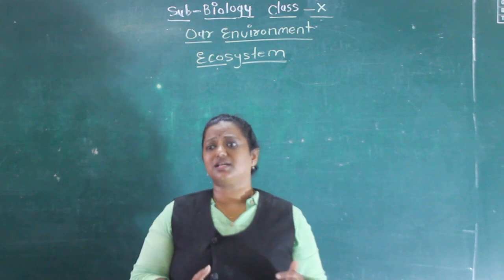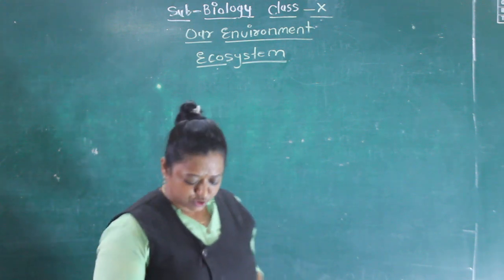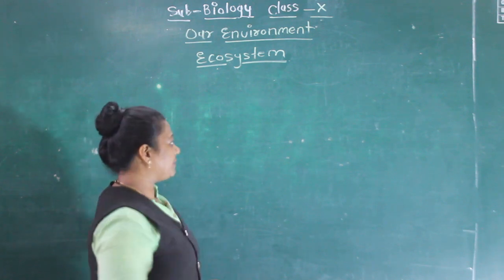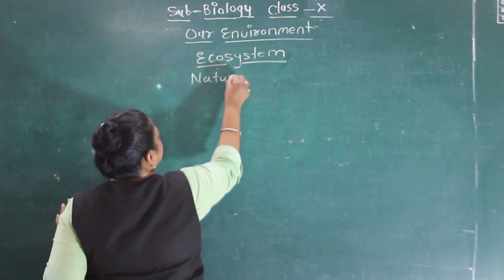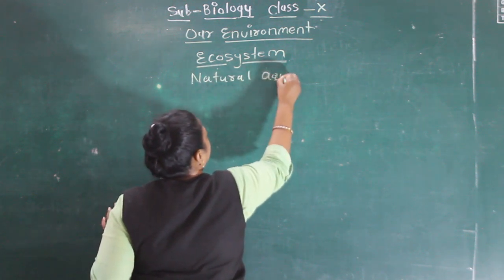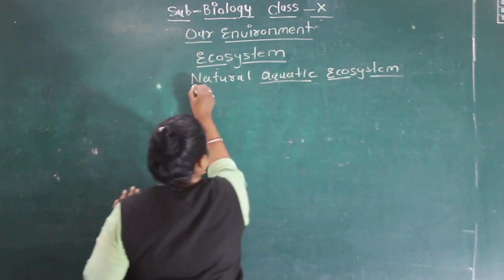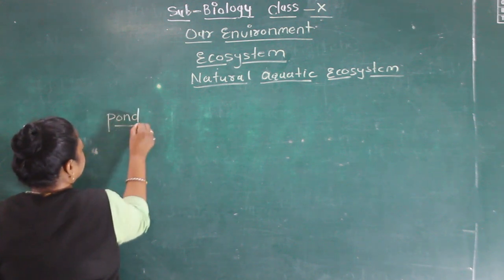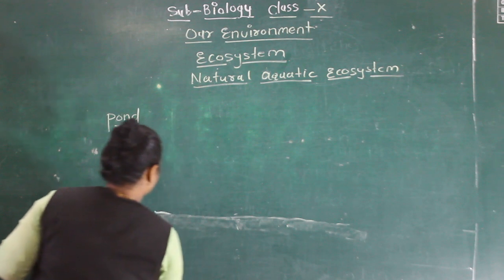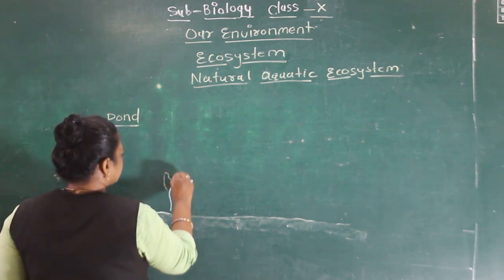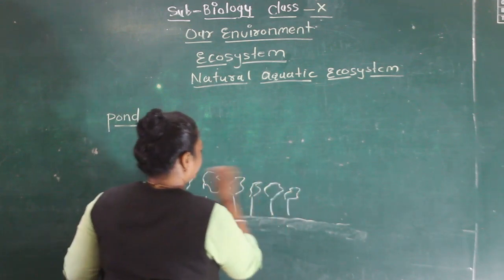So here I will give the example of a pond — a natural aquatic ecosystem. This pond contains a layer of soil at the bottom. In that soil there are small plants.